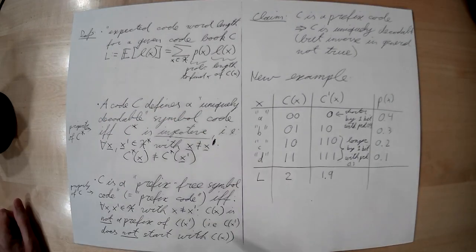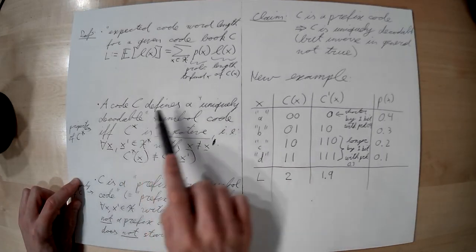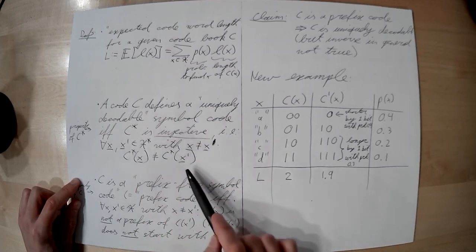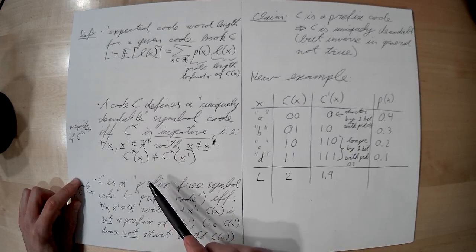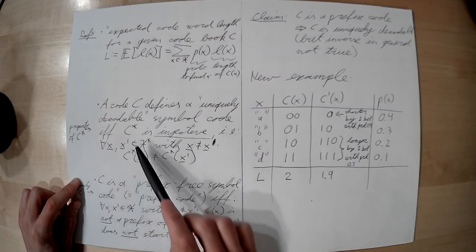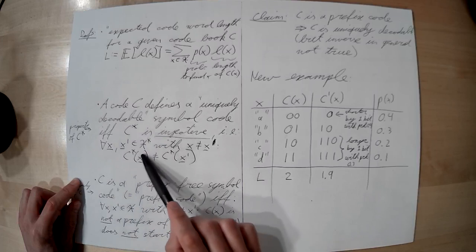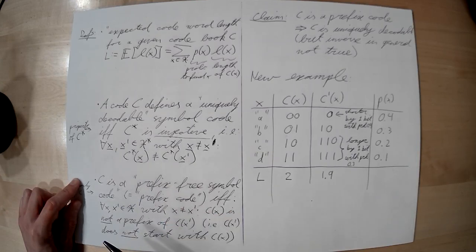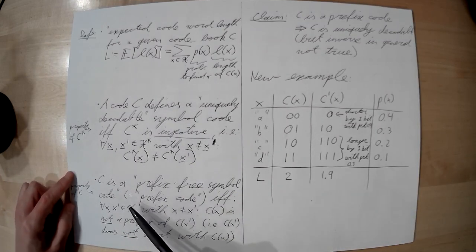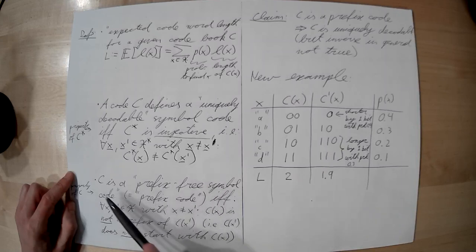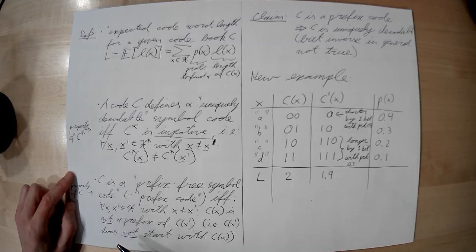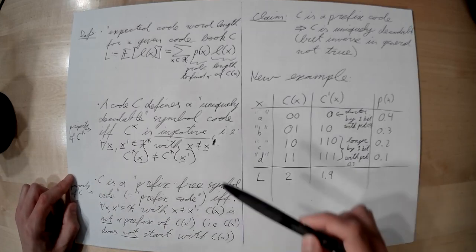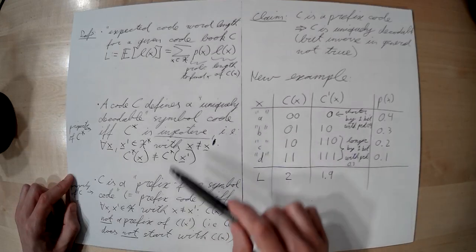We then defined two more properties. One is unique decodability: a symbol code is uniquely decodable if for any sequence of symbols it maps to a unique compressed bit string. This is a property of C*, which is the concatenation — C* of some message x̲ is the concatenation of all the codewords for all the symbols in the message. The second definition is that of a prefix-free symbol code: a codebook is prefix-free if no codeword is the prefix of another codeword. Every prefix-free symbol code is uniquely decodable, but the inverse is not necessarily true.